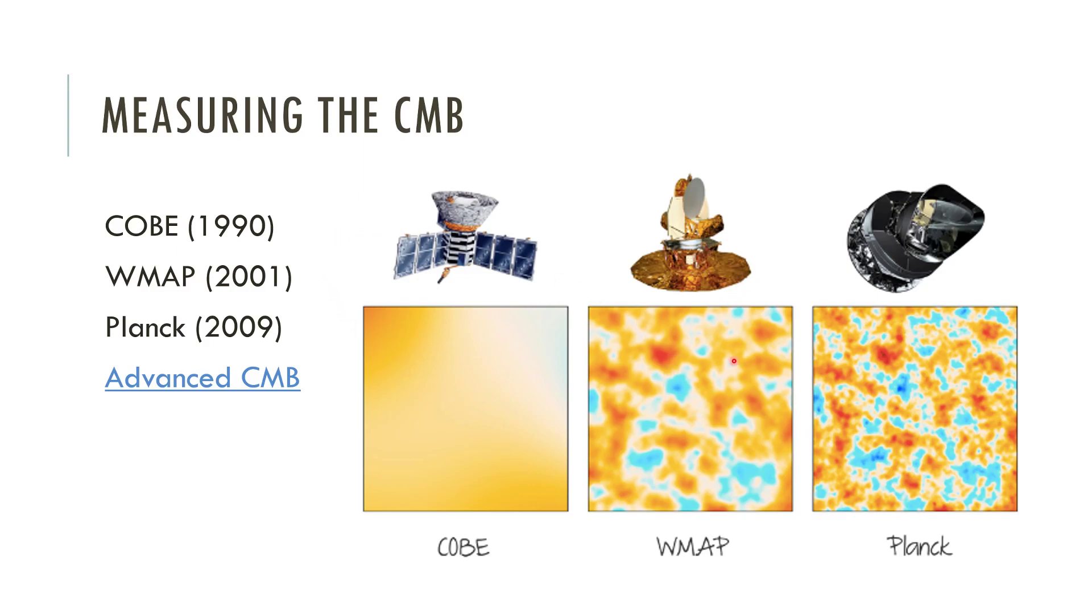In 2001, they put up the WMAP satellite. This one had better sensors, better technology. We could get better resolution. You could start to measure these really tiny differences in temperature. You can see here cooler spots, warmer spots. We started to get a better sense of these anisotropies, which helped us tie that to the evolution of the universe and where galaxies started to form and really understand the curvature of the universe too.